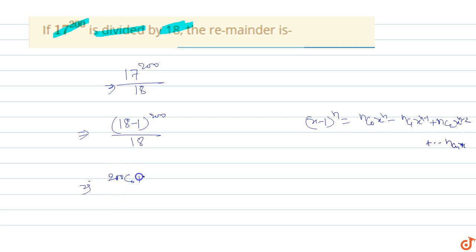200C0 times 18 power 200 minus 200C1 times 18 power 199 plus 200C2 times 18 power 197 up to 200C199 times 18 plus 200C200 times 1.